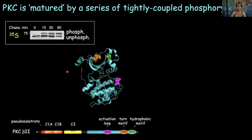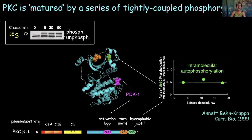These phosphorylations are put on by the following mechanisms. PDK1 phosphorylates the activation loop at the entrance to the active site — that will be magenta for the rest of the talk. The hydrophobic motif at the extreme C-terminus is the last phosphate to go on, put on by intramolecular autophosphorylation. Another residue at the C-terminus, which we name the turn motif, is regulated by TORC2.